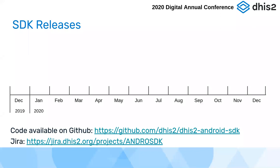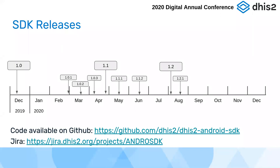The Android SDK is quite a recent product. The first release was in December last year and we have had two more major versions, plus several bug-fixing versions. The current one is 1.2.1, which is planned for early October, aligned with the next version of the official Android application and with the release of DHIS2 2.35, because this new SDK will be compatible with that.